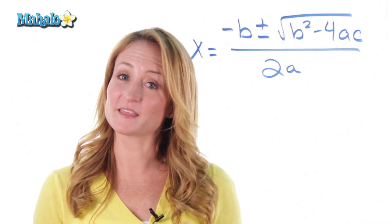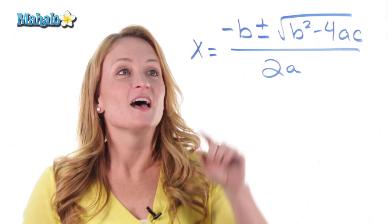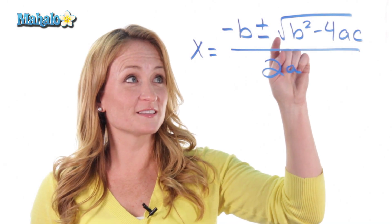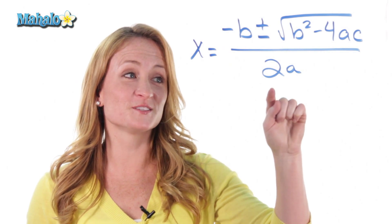I'm going to sing it once for you and then I'm going to ask you to sing it along with me. Here goes nothing. X equals opposite B plus or minus the square root B squared minus 4AC divided by 2A.